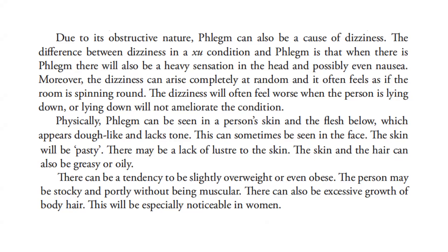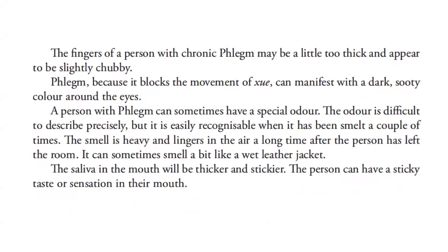There can be a tendency to be slightly overweight or even obese. The person may be stocky without being muscular. There can also be excessive growth of body hair, especially noticeable in women. The fingers of a person with chronic phlegm may be slightly chubby. Phlegm, because it blocks the movement of blood, can manifest with a dark color around the eyes. A person with phlegm can sometimes have a special odor - heavy and lingering, sometimes resembling a wet leather jacket.